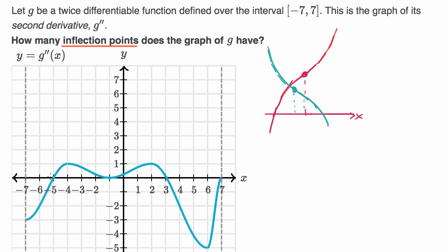Right over here, we are crossing the x-axis, so that is an inflection point. Right over here, we are crossing the x-axis, so that is an inflection point. Here and here, we touch the x-axis — our second derivative is equal to zero — but we don't cross; we stay non-negative the entire time. Similarly, past this endpoint, the function is only defined over this interval, so we don't cross the x-axis there either.